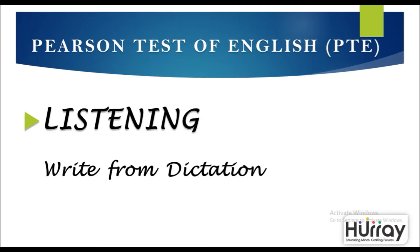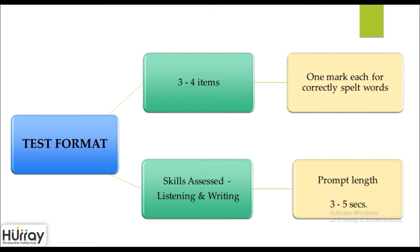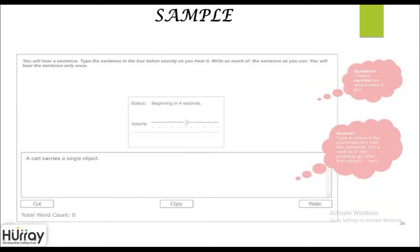Welcome to the Pearson Test of English, also known as PTE. This is the listening section, and the last question to be discussed is Write from Dictation. The test format is as follows: you will be given three to four items. The skills assessed are listening and writing. The marks allotted are one mark each for correctly spelled words. The prompt length is between three to five seconds.